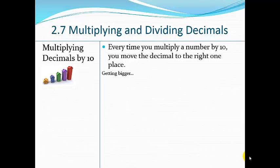Okay, so here we are with 2.7 multiplying and dividing decimals. And before we go into the exact details on that, I just want to remind us about when we multiply by 10. What we actually do is we move our decimal place over. So it gets bigger.